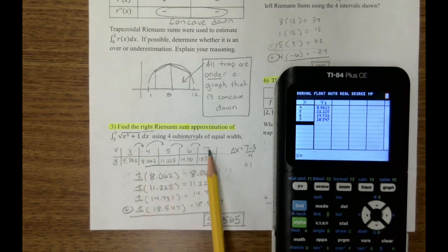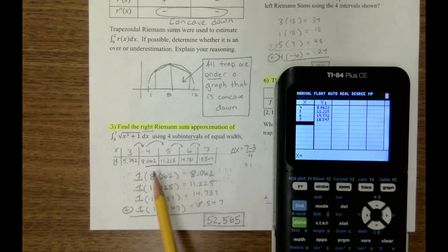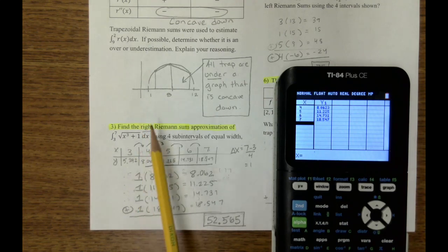So I have my inputs, my outputs, and now I can go length, width, or sorry, width, length, width, length, width, length, add them all up. The area is 52.5. That's four right Riemann sums.